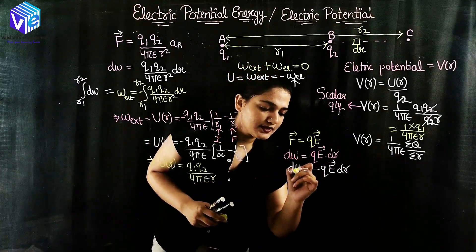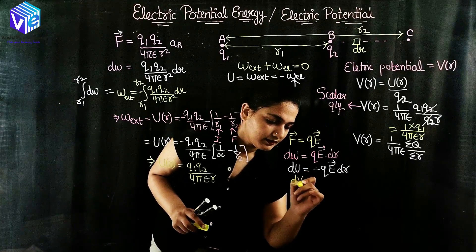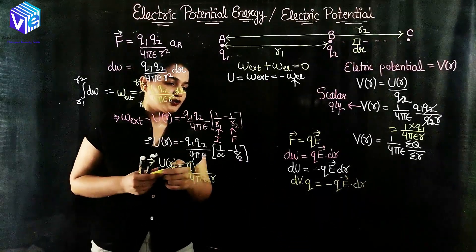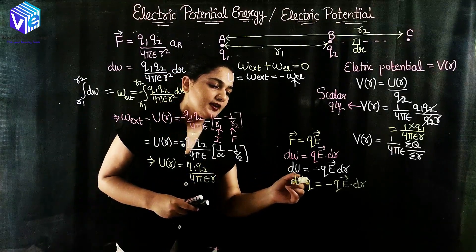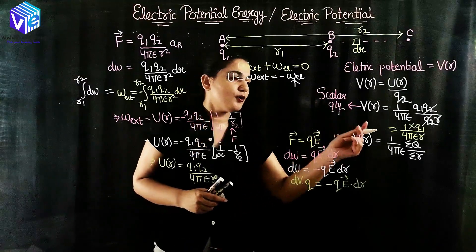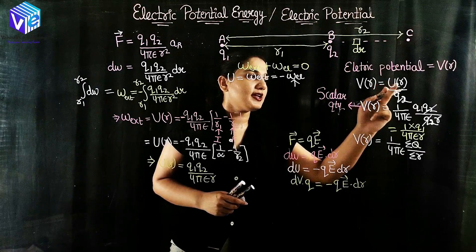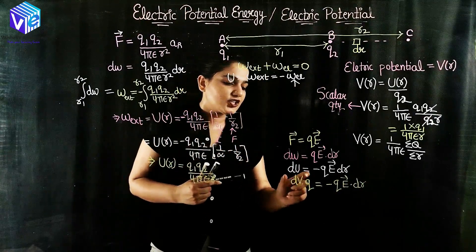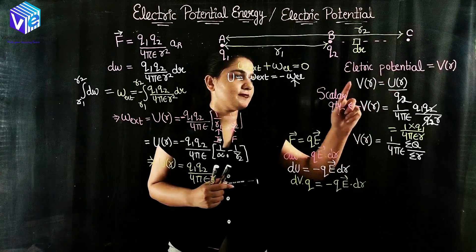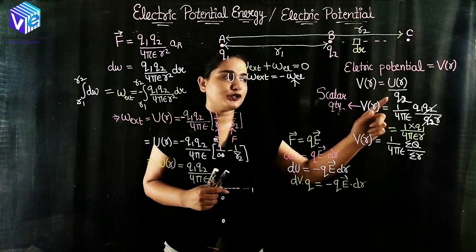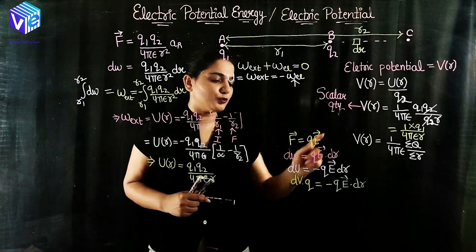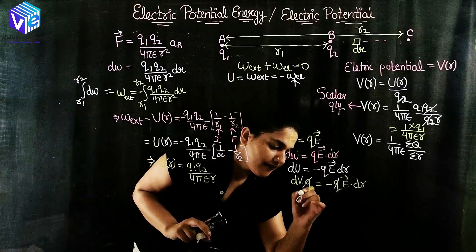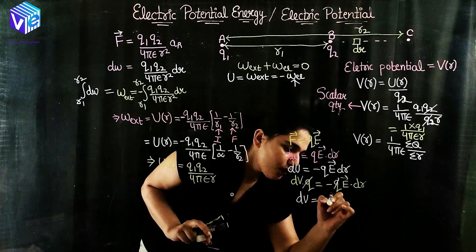In place of dU, I substitute dV·q, since the relationship between V and U is V = U/q, or equivalently U = q·V. Substituting dU = q·dV gives q·dV = −qE·dr. The q cancels out on both sides, so dV equals the negative of E·dr.